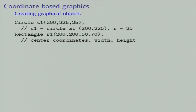Coordinate-based graphics — this is how simple CPP lets you do things. 'Circle C1 200, 225, 25' will create a circle called C1 centered at 200, 225 with radius equal to 25. Similarly, you can create a rectangle called R1 centered at 200, 200 with width 50 and height 70.